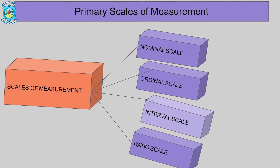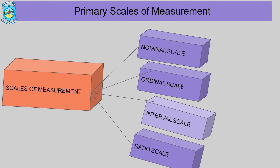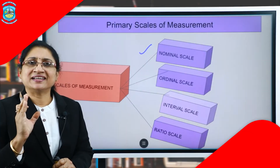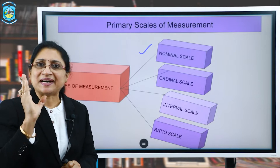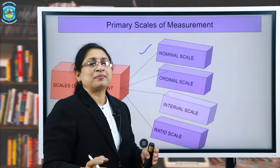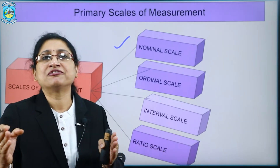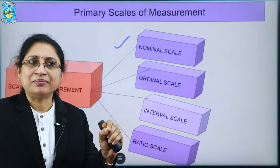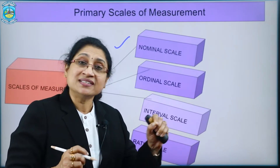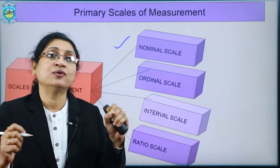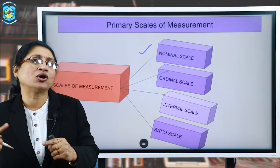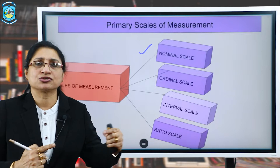When we talk about the nominal scale, it actually indicates numbers — but nominal stands for a category. For example, you're talking about male or female, so we put numbers such as one or two as an indicator. That number doesn't indicate a value; it indicates a category — one belongs to male, two belongs to female.